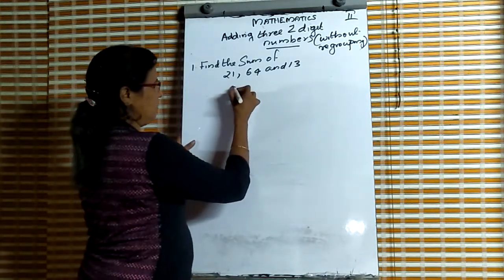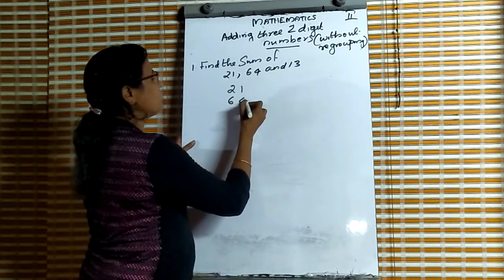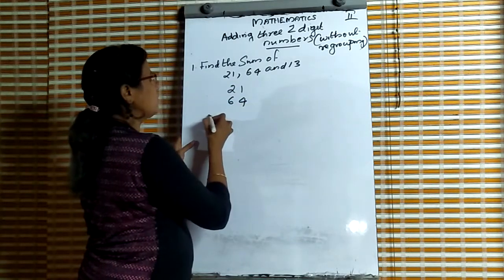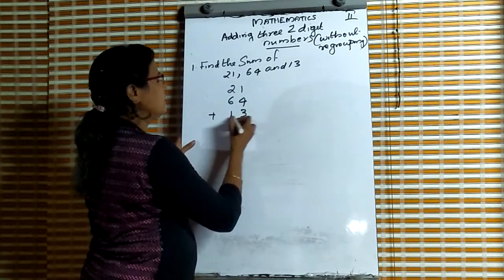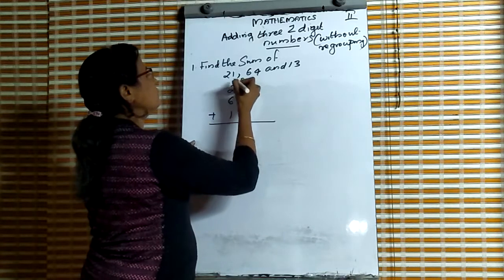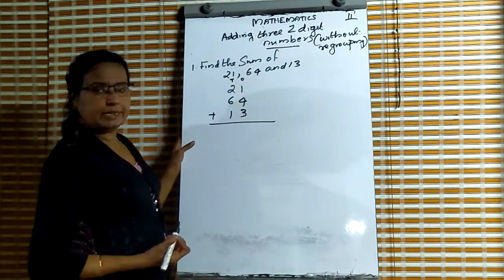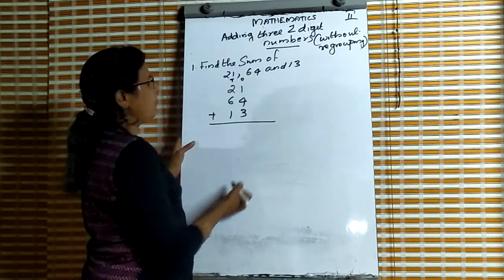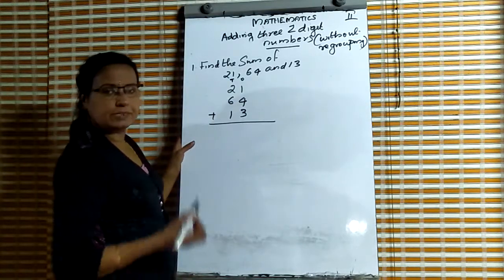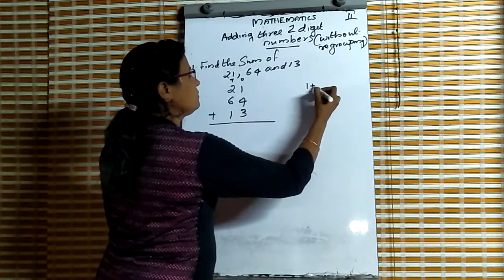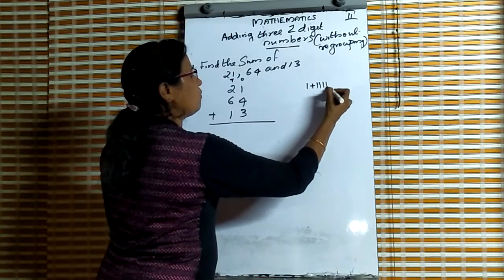We have to find the sum. We write the numbers one below the other: 21, 64, 13. These digits are in the ones place, and these are in the tens place. First, we add the digits in the ones place: 1 plus 4 plus 3.